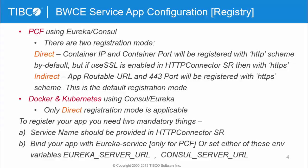For the BWC service app configuration — which is your registry — for PCF there are two registration modes: direct and indirect. In direct mode, the application is registered with the container IP and container port. The scheme is HTTP by default but can be set to HTTPS; in that case, you need to enable SSL in the connector shared resource. In indirect mode, it is registered with the routable URL with port 443 and defaults to HTTPS. For Docker and Kubernetes, it is always direct registration mode. To register your app you need two mandatory conditions: provide the service name in your connector shared resource, and bind your application with the Eureka service on Cloud Foundry or provide Eureka server URLs or the Consul server URL.